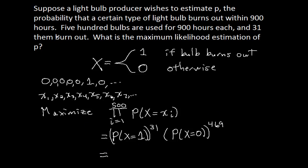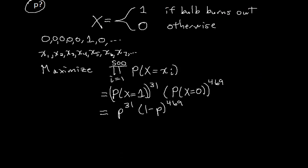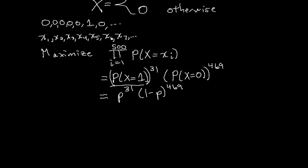Now we write this in terms of our parameter p, which we're trying to estimate — the probability that a certain type of lightbulb burns out within 900 hours. That's the probability that X equals 1, so we have p to the power of 31. And since this is Bernoulli, the probability that X is the other value is just 1 minus p, so we have 1 minus p to the power of 469. This is the expression we're going to maximize.